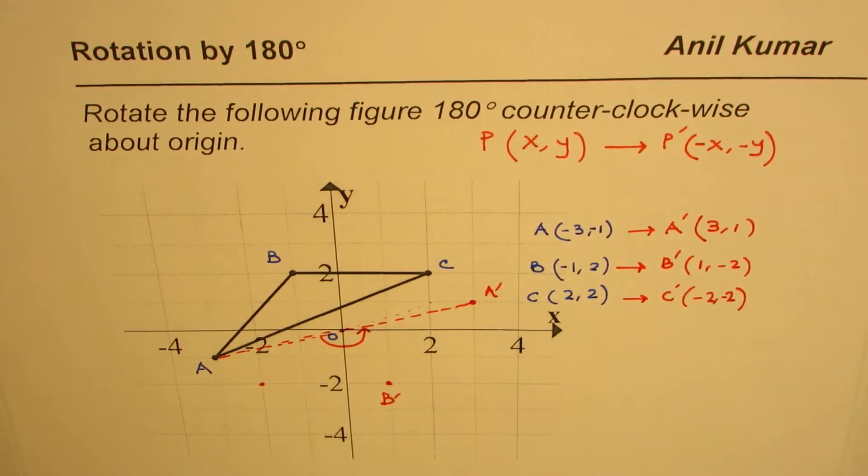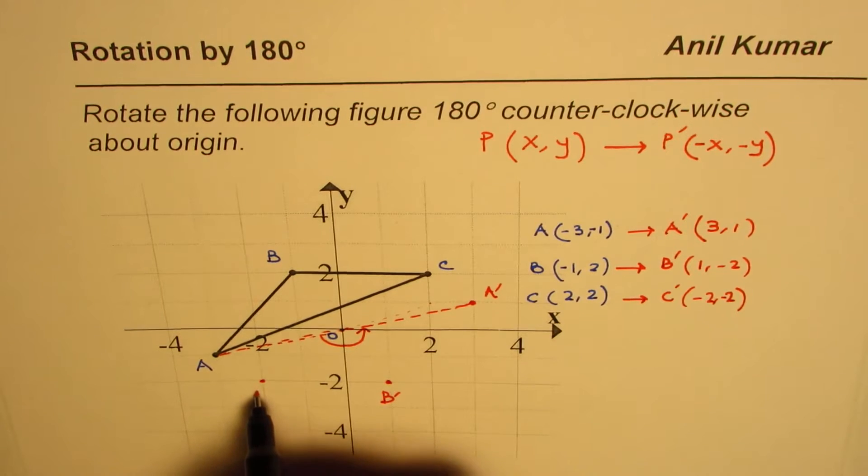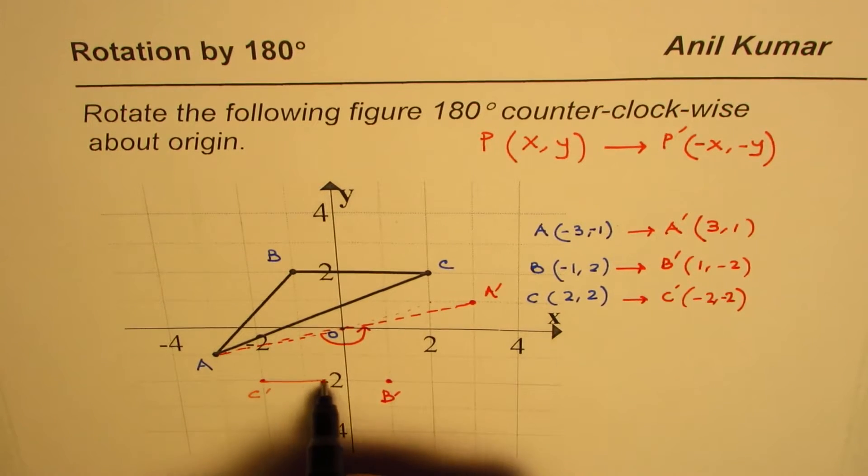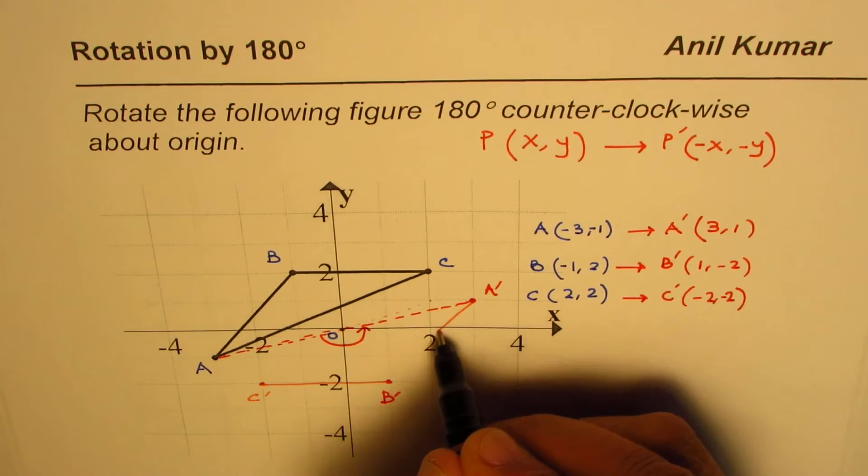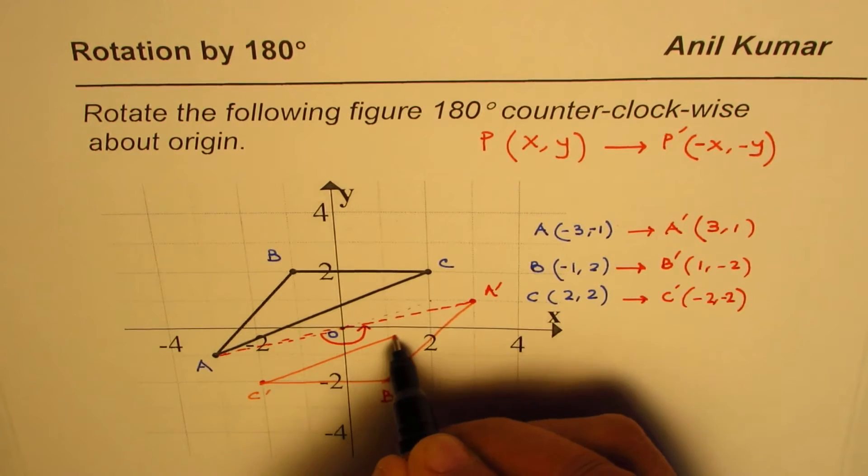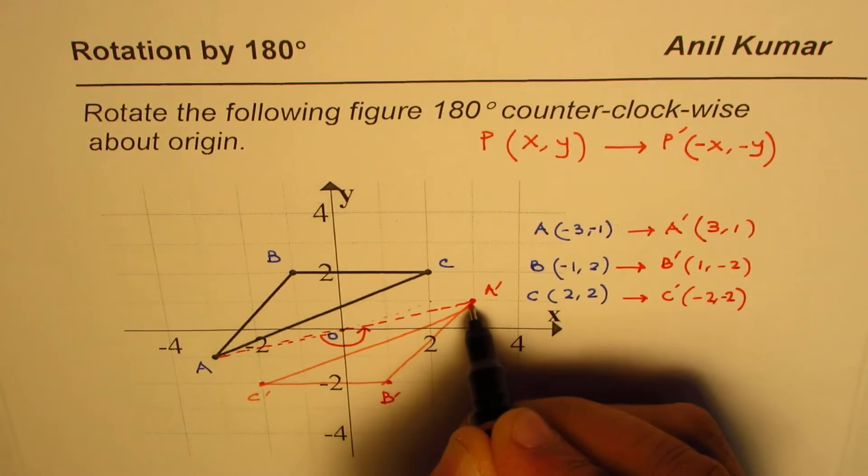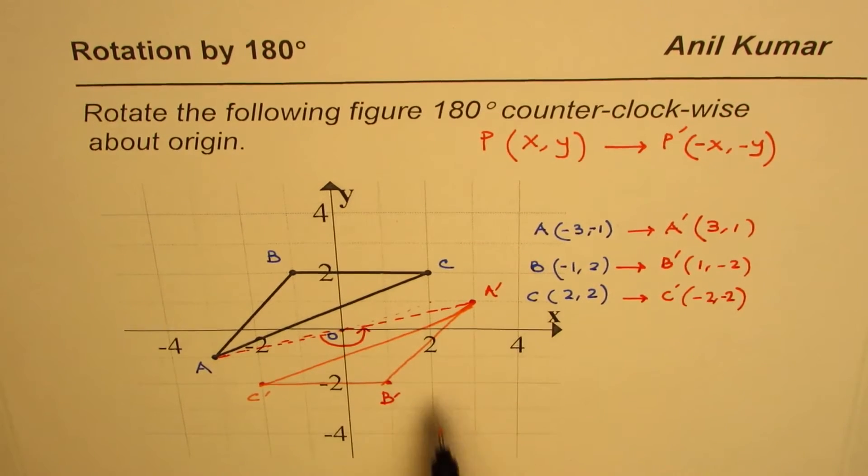So (-2, -2), that becomes the new figure for us. Let me just connect them with a different ink. What we have here is the point, this is C', so let's connect them: C', B', A'. That's the kind of figure. In the test you should draw proper lines to get full marks, but that is how it should be done.